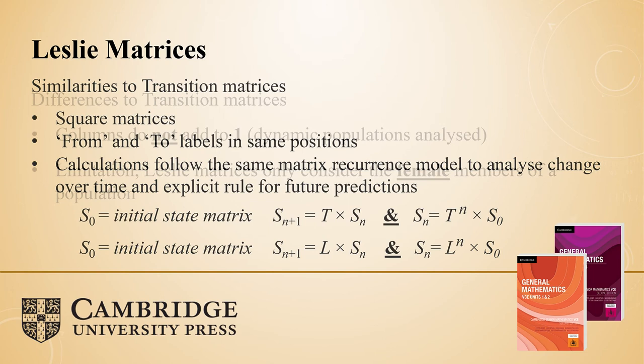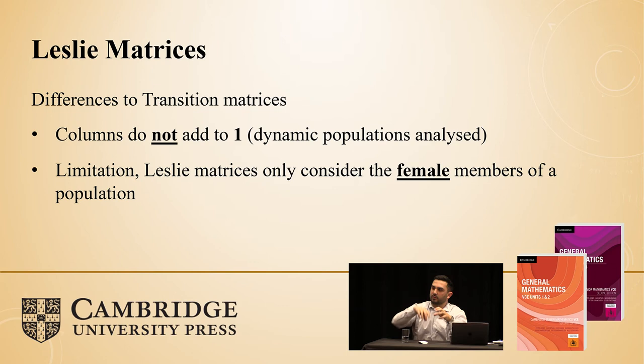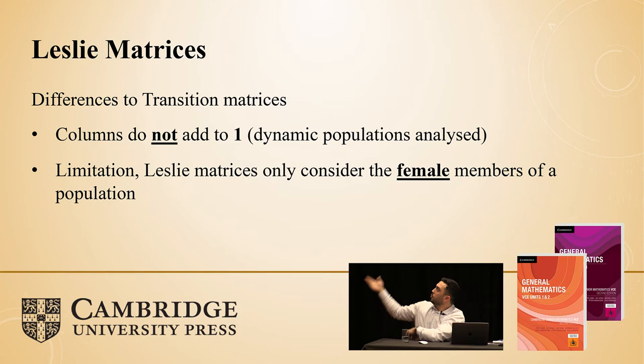Some differences: the columns do not add up to one. We're not talking about the same group of objects moving between states. We're talking about a dynamic population — we're seeing growth or decrease in population. Because of those changes, the columns will not add up to one. We can already start predicting some exam questions — potentially an easy one at the start: 'Which of the following matrices are Leslie matrices?' — where some students might incorrectly choose the ones with columns adding up to one.